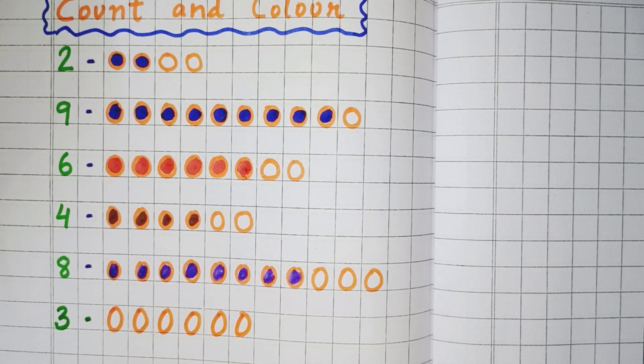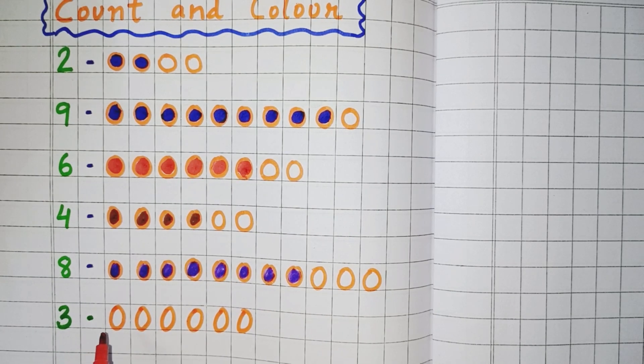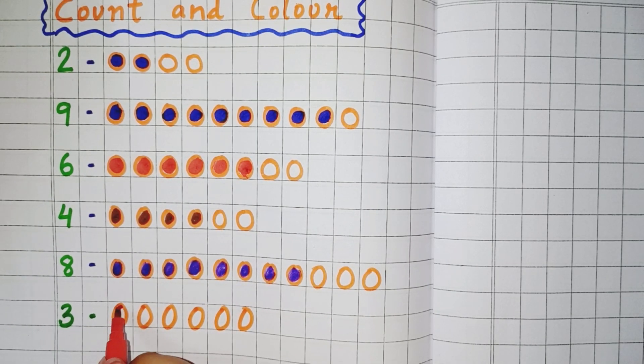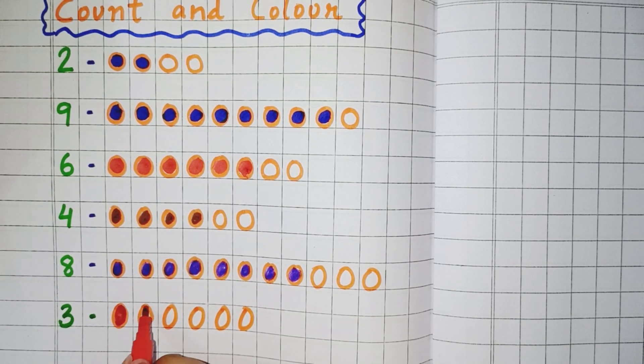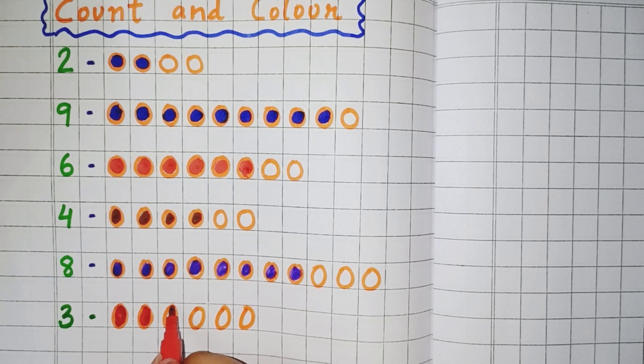Now the next number here you can see is 3. So you will count and color 3 objects. 1, 2, 3.